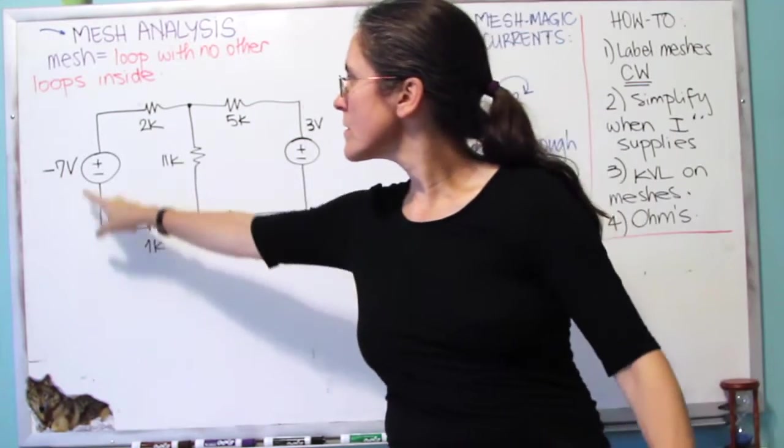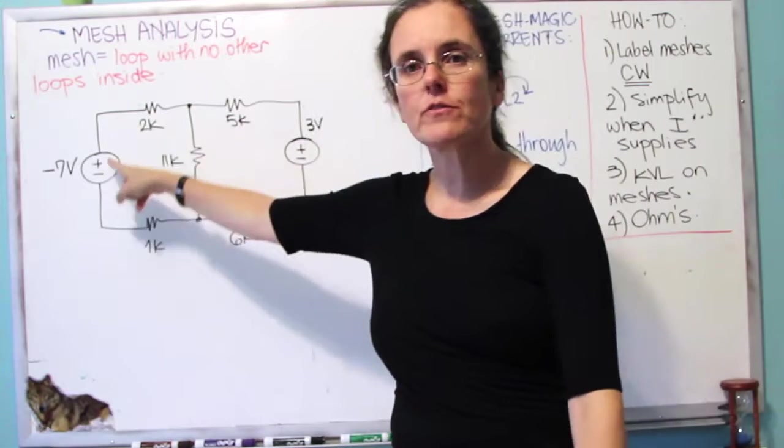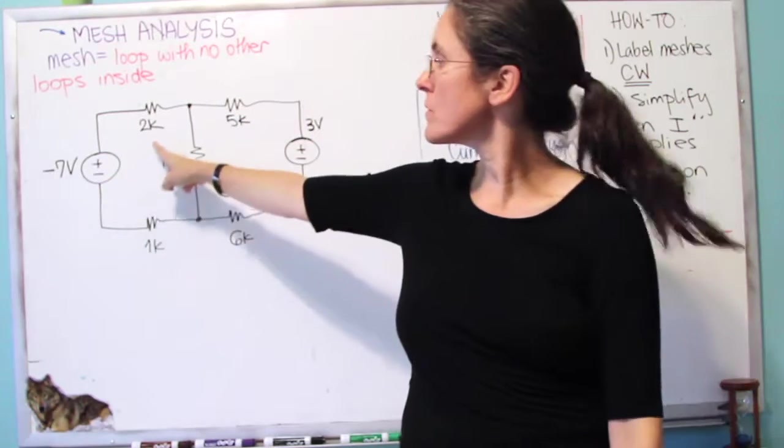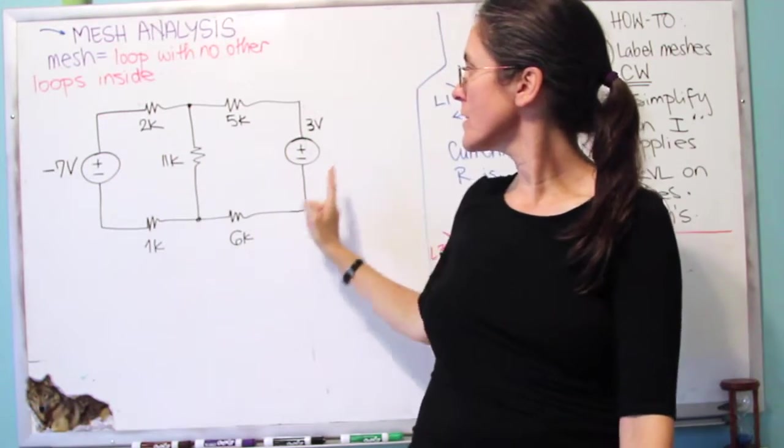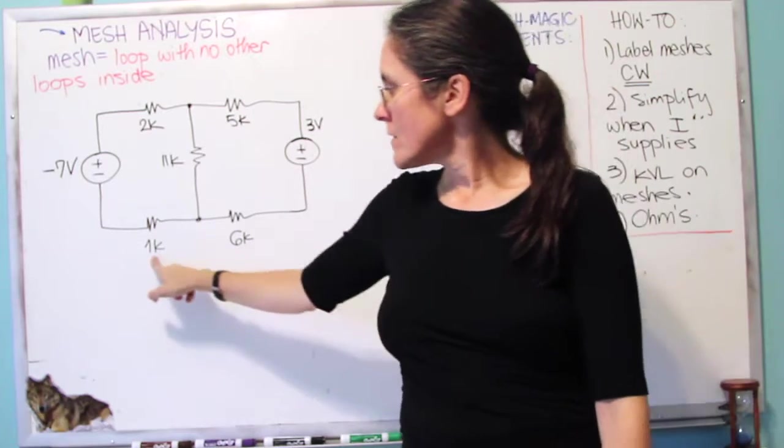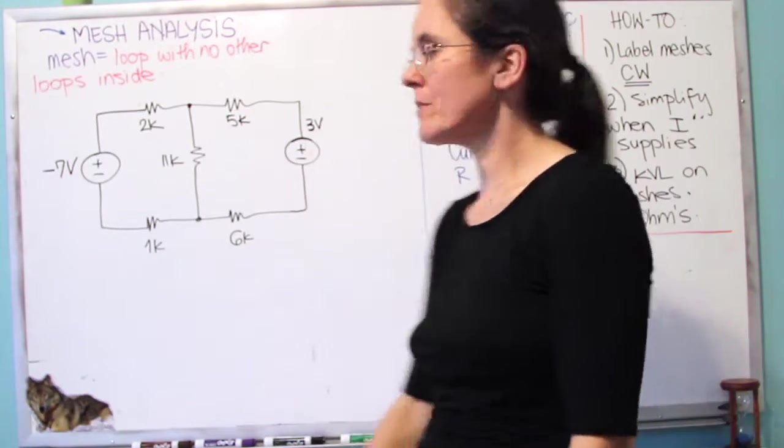So this circuit, for example, has an outer loop that's not a mesh. The loop including the 7 volts, or the minus 7, 2k, 5k, 3 volts, 6 and 1. This is a loop, but it's not a mesh.